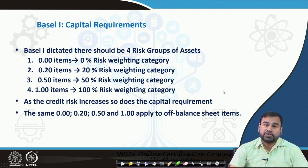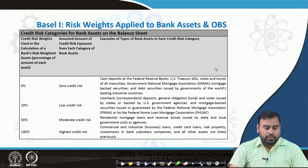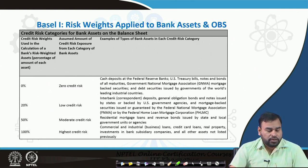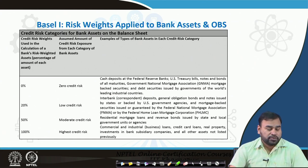We have to see what kind of off-balance sheet items exist, how they are converted into on-balance sheet items, and accordingly risk weights can be provided. Looking at the table of on-balance sheet items, risk weights are given to different types of assets: zero credit risk, low credit risk, moderate credit risk, and the highest credit risk.